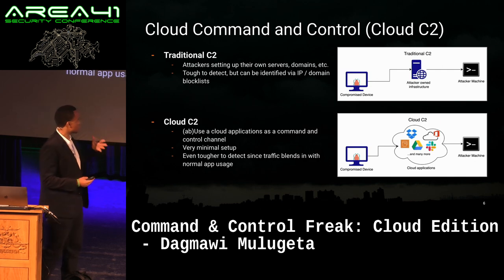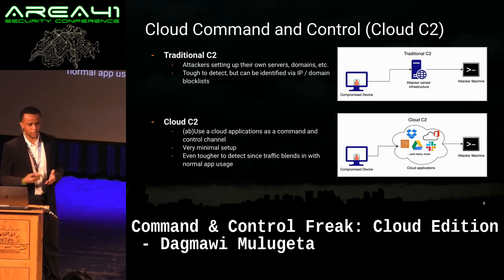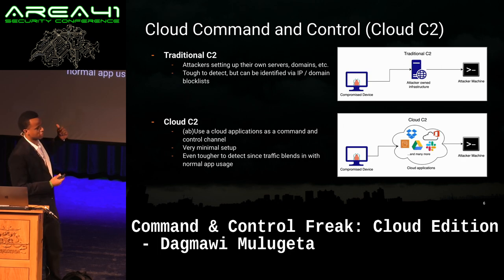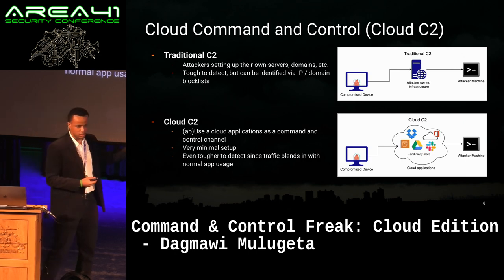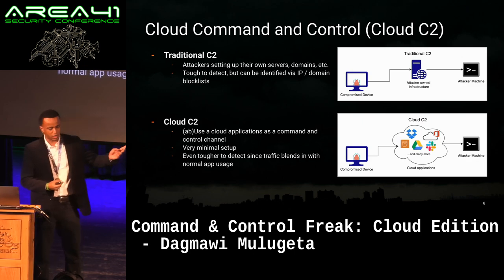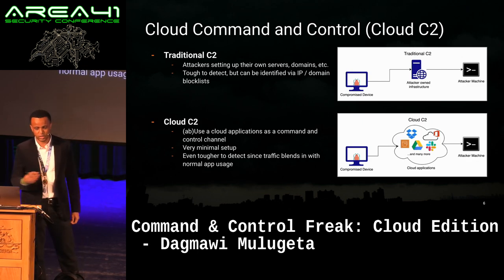What we've started seeing — and it's seen a little bit of an uptick over the past few years — is attackers have started abusing cloud apps as a medium for command and control. They're using things like Dropbox instances, Google Drive folders, S3 buckets, and Slack channels as a medium to tunnel commands back and forth.